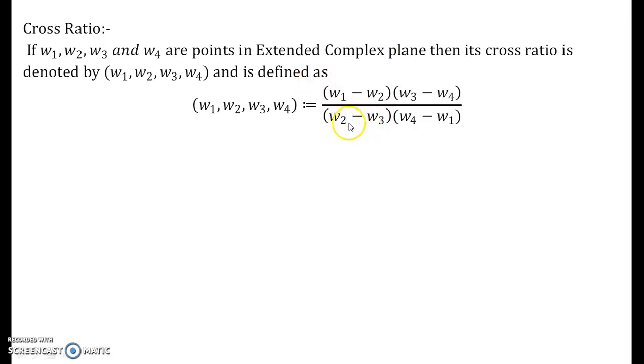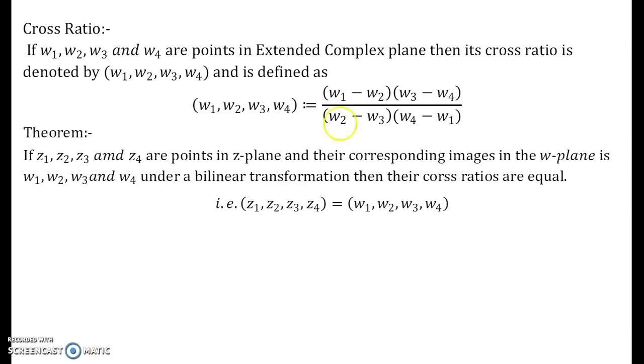Now related to this definition, there is a theorem that is very important to us along with the bilinear transformation. It goes this way: if z1, z2, z3, and z4 are points in z-plane and their corresponding images in w-plane are w1, w2, w3, w4 under some bilinear transformation, any arbitrary bilinear transformation, then their cross ratios are equal. That is, the four points in z-plane and the four points in w-plane have same cross ratio under the bilinear transformation. What this means is that the bilinear transformation preserves cross ratio. That is the hidden meaning in this theorem.